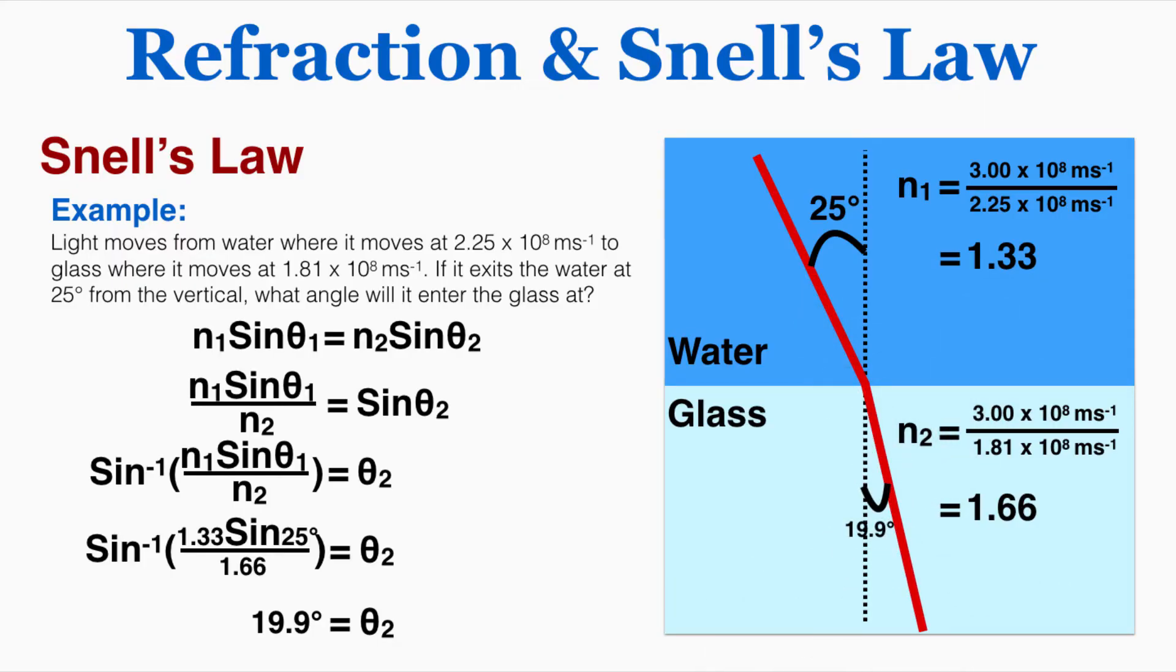So you can see there it was bent toward the normal. It's closer to the normal line than it was before. It's at a smaller angle than it was before. So that's how you use Snell's law to calculate the path of light moving from one material to another.